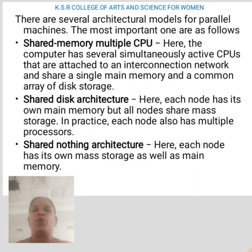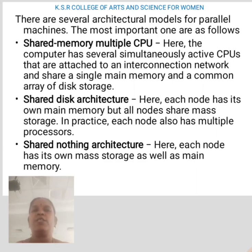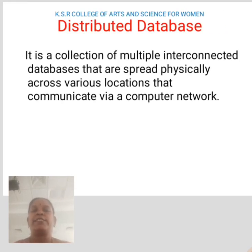The most important ones are as follows. Shared memory with multiple CPUs: here, the computer has several simultaneously active CPUs attached to an interconnection network, sharing a single main memory and a common array of disk storage. Shared disk architecture: here, each node has its own main memory but all nodes share mass storage. In practice, each node also has multiple processors. Shared nothing architecture: here, each node has its own mass storage as well as main memory.